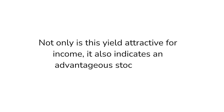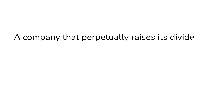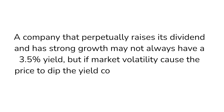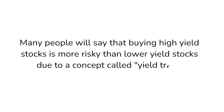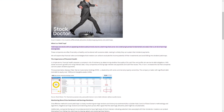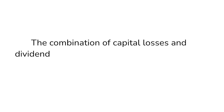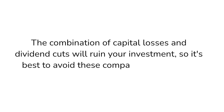In general, I look for companies that have at least a 3.5% dividend yield. Not only is this yield attractive for income, it also indicates an advantageous stock price. A company that perpetually raises its dividend and has strong growth may not always have a 3.5% yield, but if market volatility causes the price to dip, the yield could spike to over 3.5%. Many people will say that buying high yield stocks is more risky than lower yield stocks due to a concept called yield trap. A yield trap is something that happens when a company's share price is falling but their dividend remains the same. This will cause a spike in the dividend yield, but if the company's in trouble, they'll probably cut the dividend. The combination of capital losses and dividend cuts will ruin your investment, so it's best to avoid these companies at all costs.